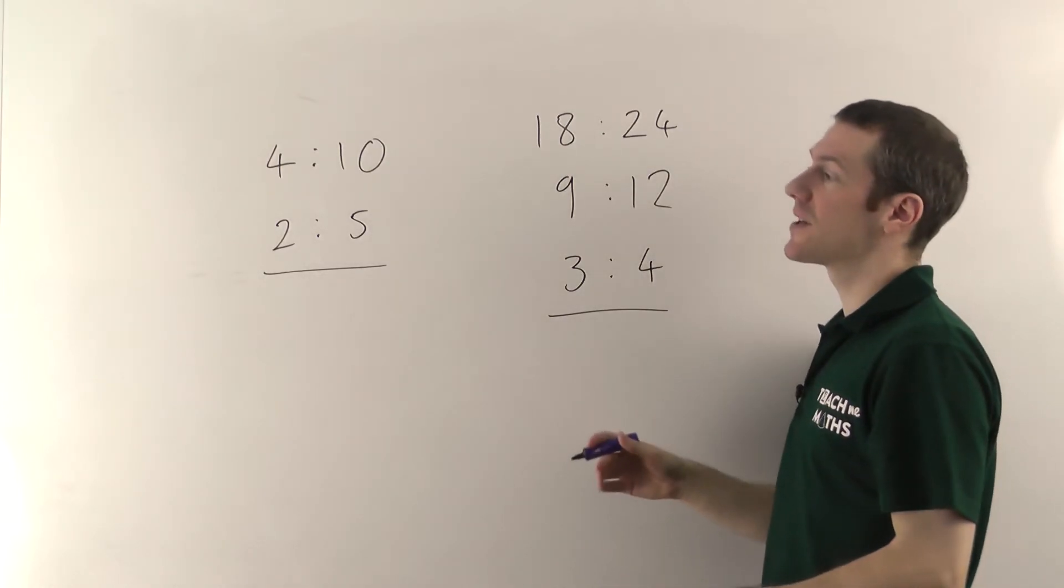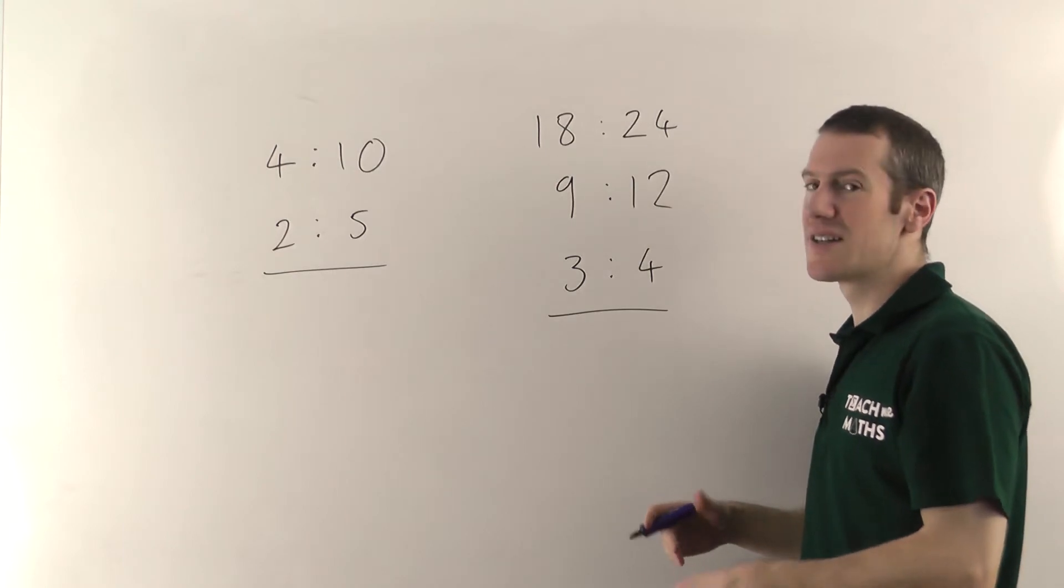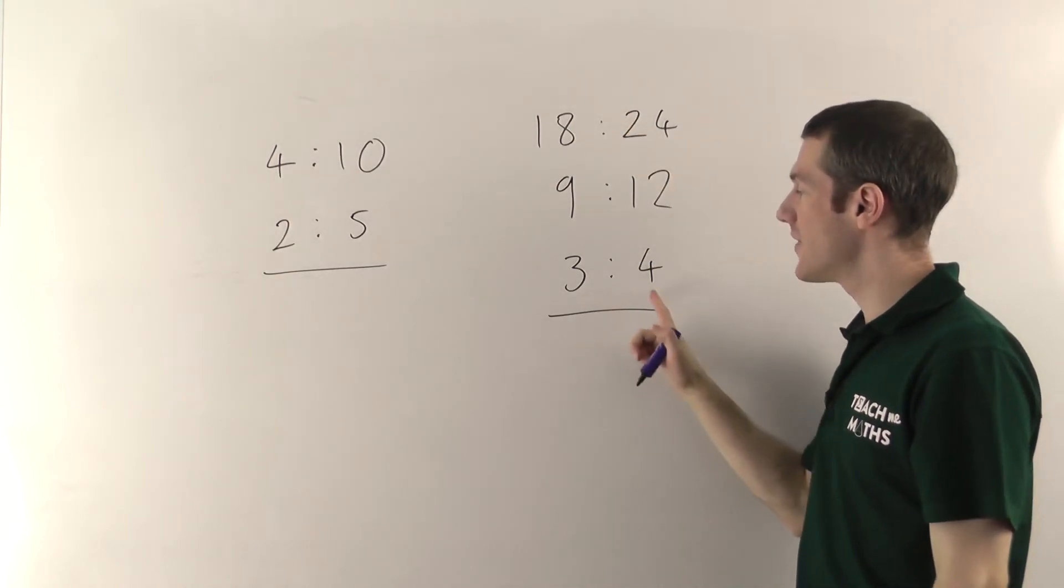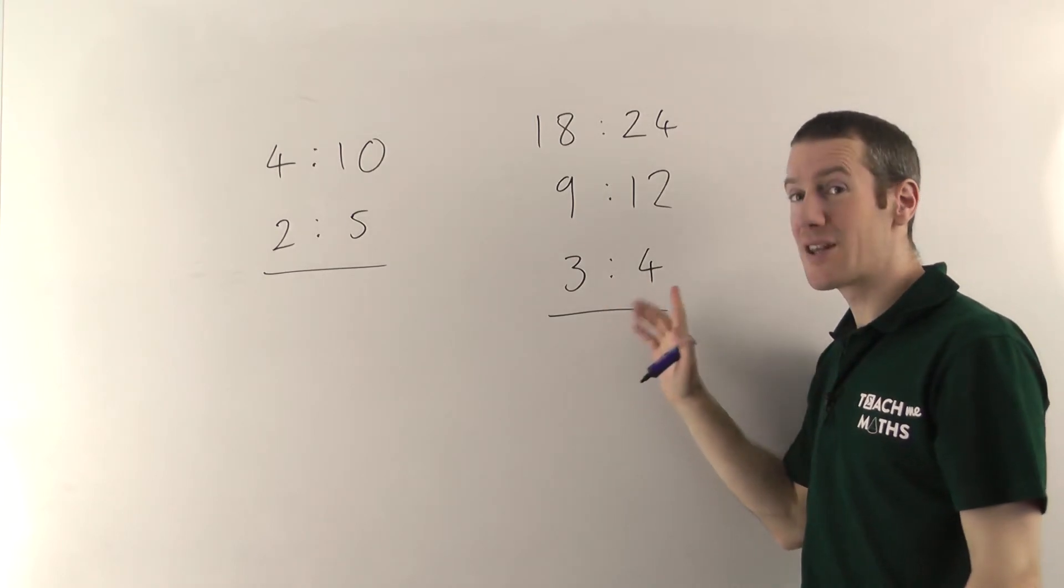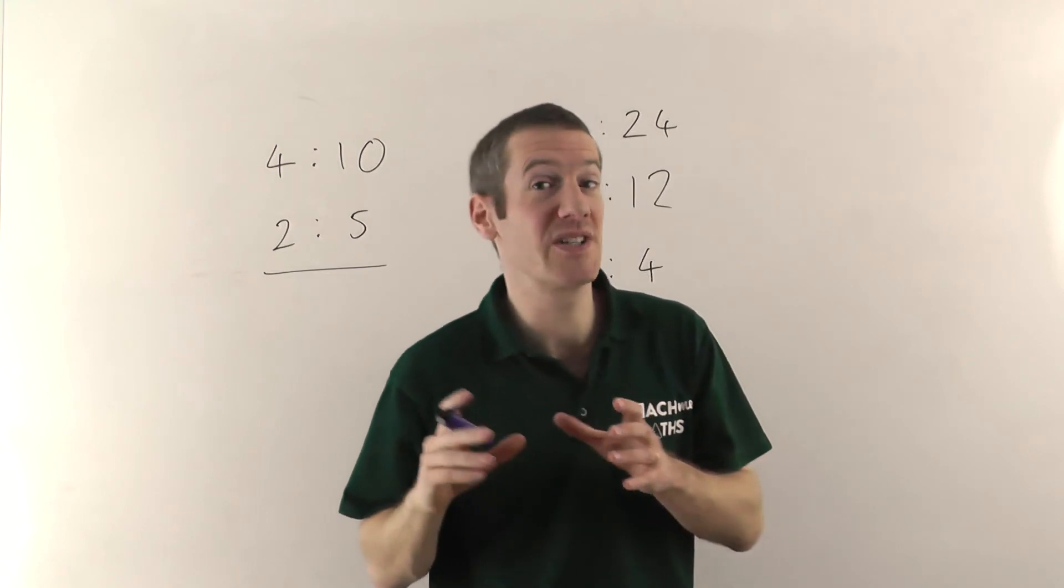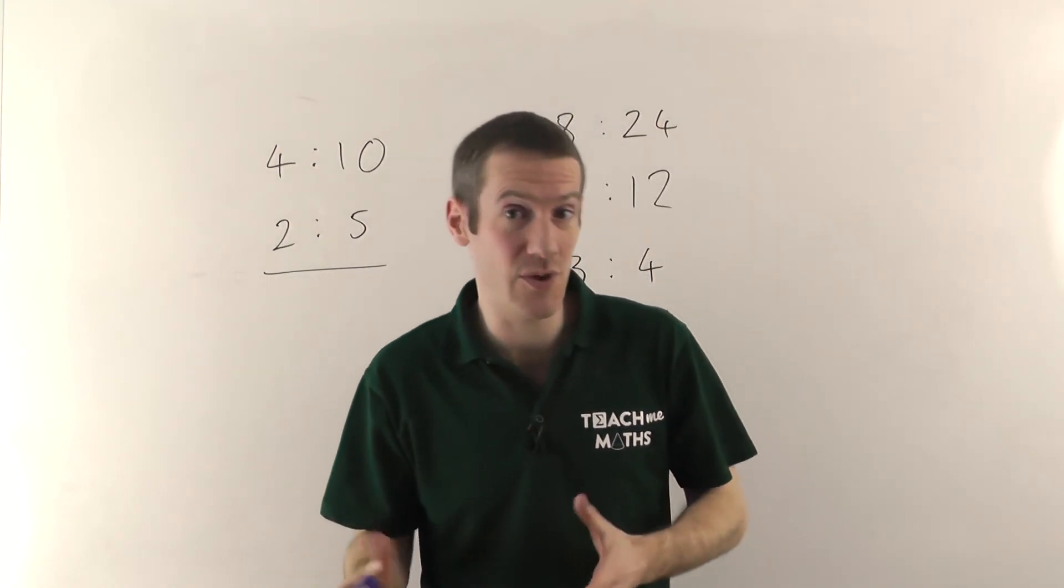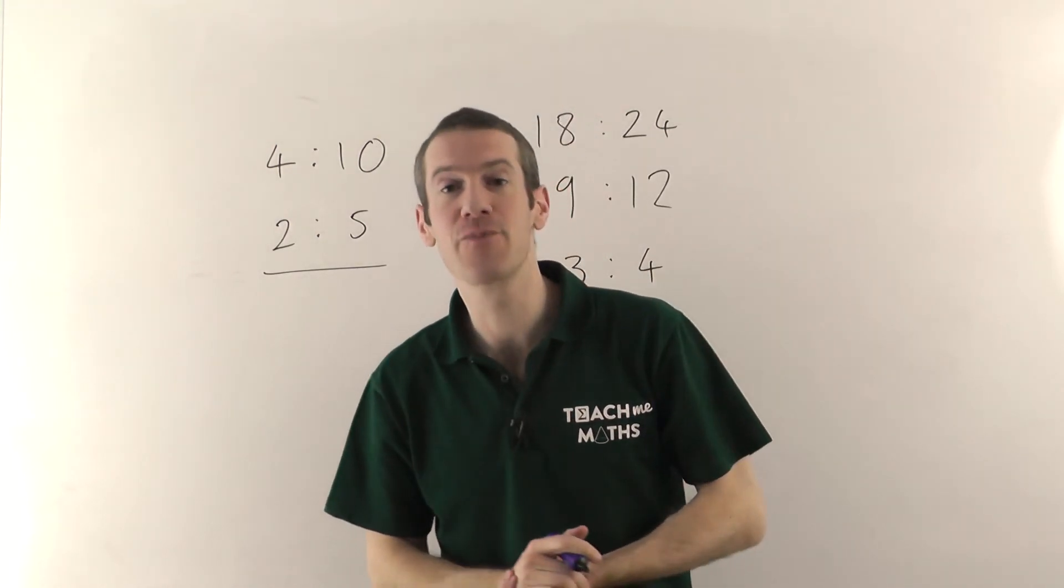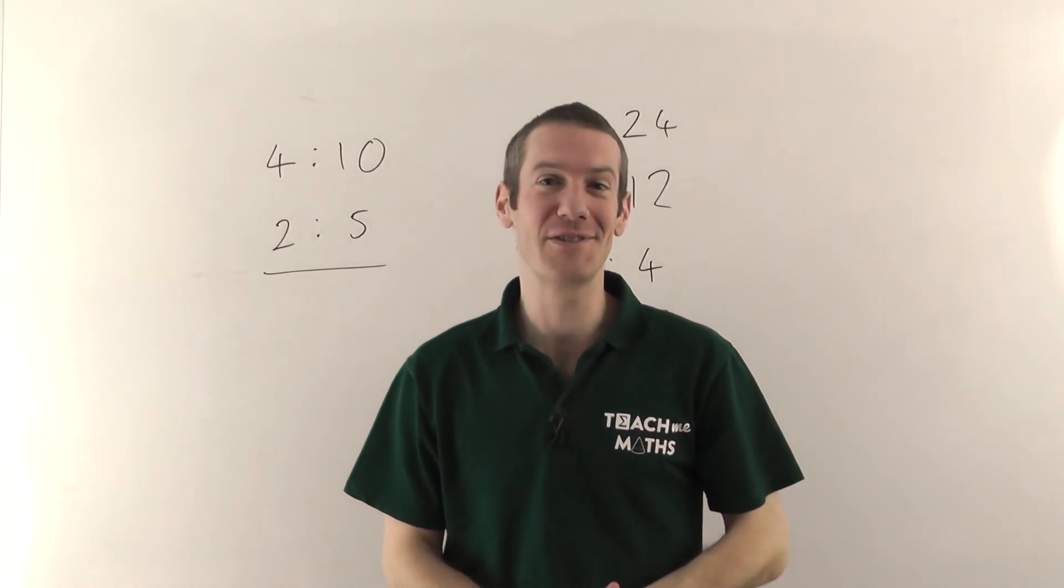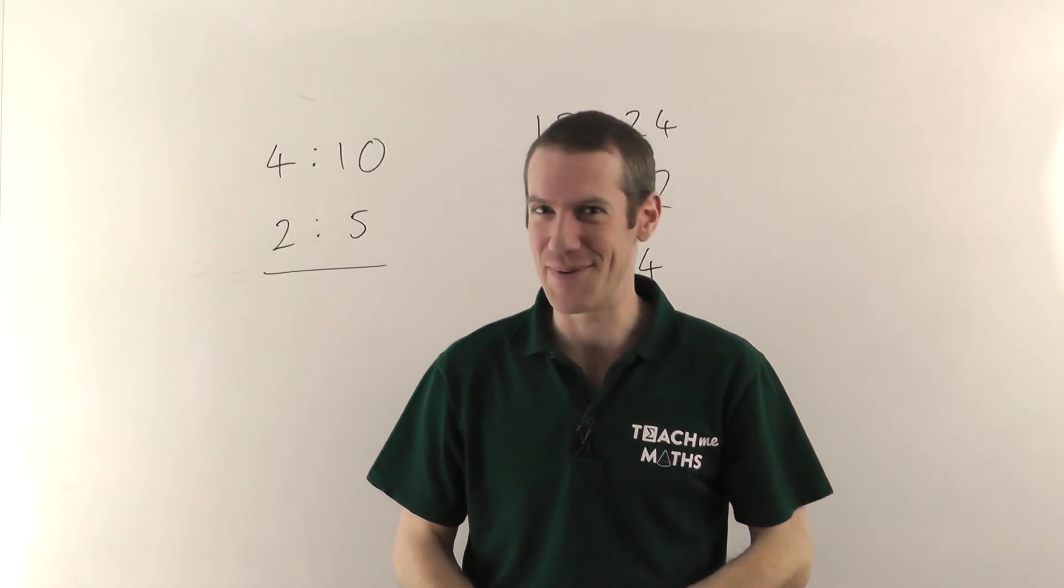So sometimes they will give you ratios and they'll say express this ratio in its simplified form. And that's all you do. You just keep dividing down until you can't divide the numbers down anymore, making sure you keep them as whole numbers on either side. So as I say if you want to know how to solve particular problems or questions to do with ratios go and watch that video. But as far as the basics are concerned that's all you really need to know. My name is Jonathan Hicks and you're watching Teach Me Maths.